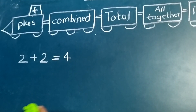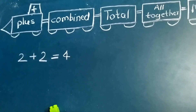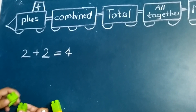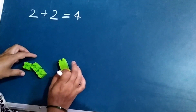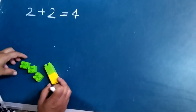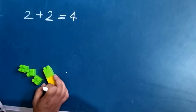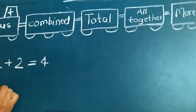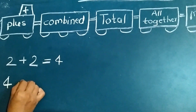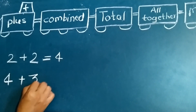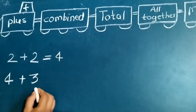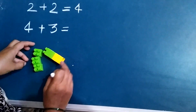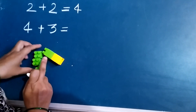Next, I have four blocks. Swara gave me three more blocks. How many total blocks do I have? I have four blocks, and Swara gave me three more blocks. Let's find the total blocks.